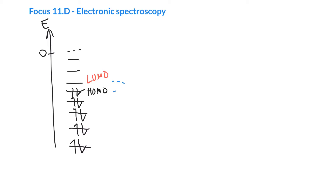This energy gap is normally why molecules have a particular color, and it corresponds to an energy that is typically in the visible range. We can do promotions up to here — we can actually absorb ultraviolet light if the molecules have a large HOMO-LUMO gap. Or we can promote from a deeper molecular orbital to the LUMO, or even all the way up to a LUMO+1 or LUMO+2, and these might correspond to ultraviolet transitions.